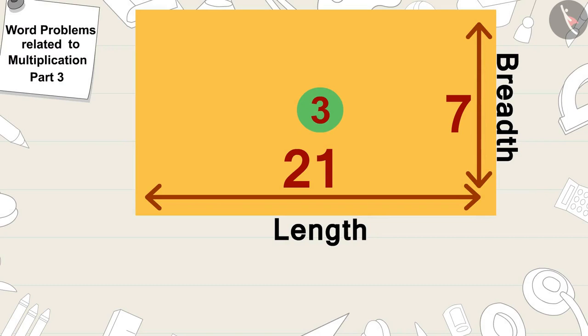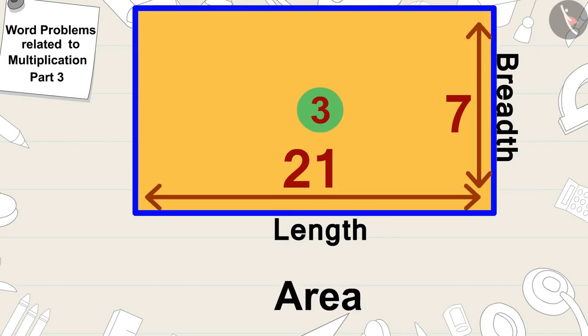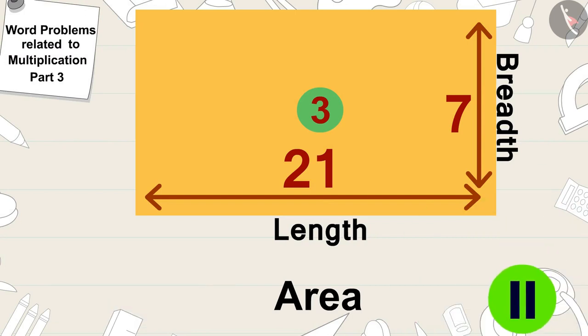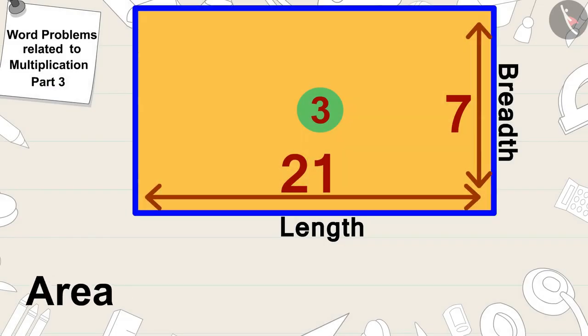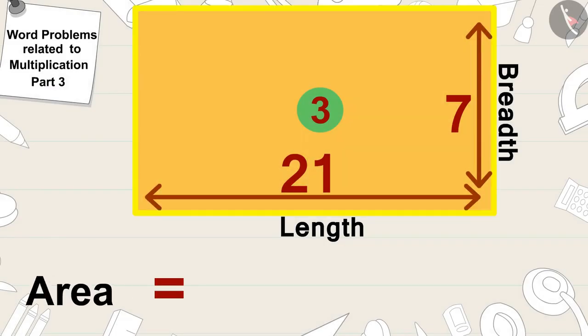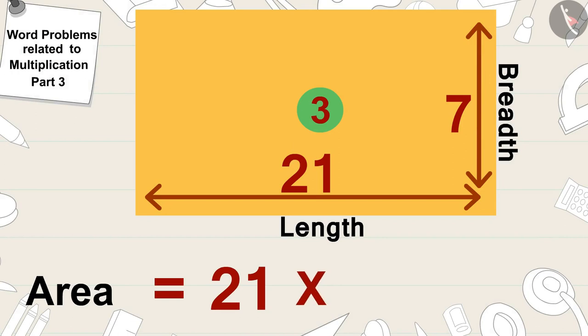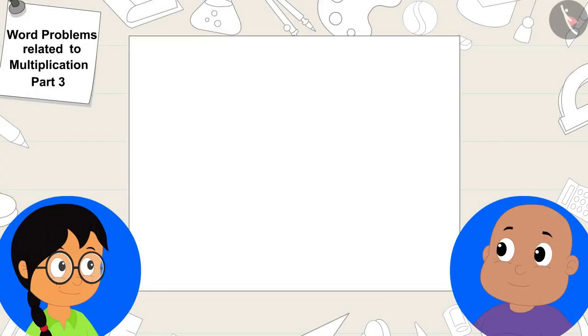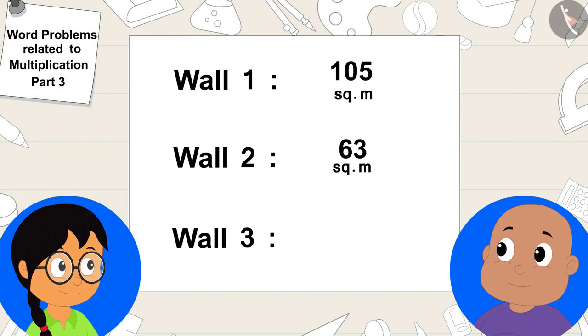Children, can you find the area of this rectangular wall? If you want you can stop the video and find the answer. The area of this wall is 21 times 7 or 147 square meters. Your answer is absolutely correct.